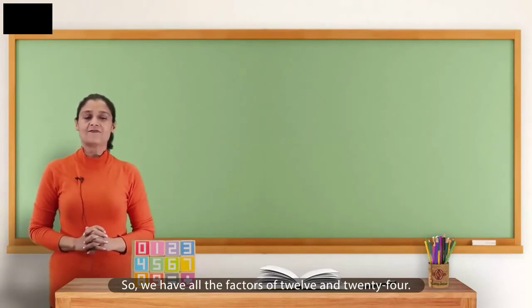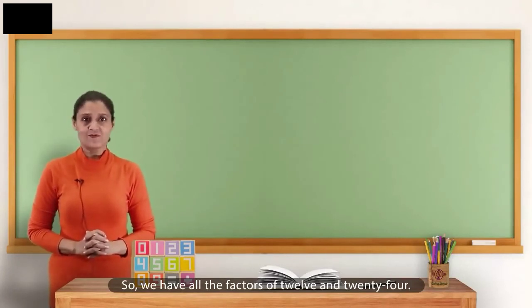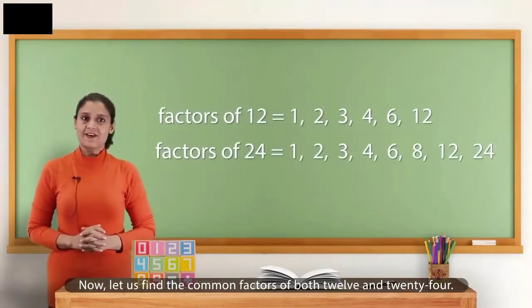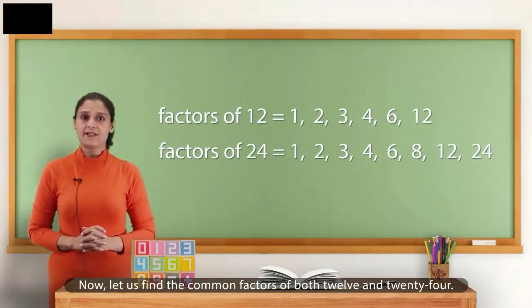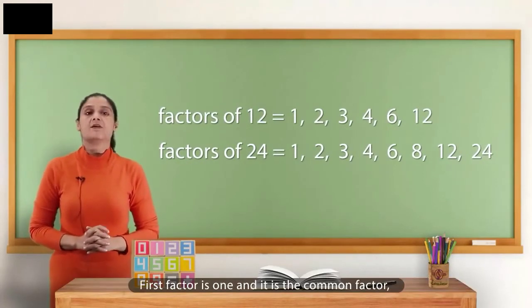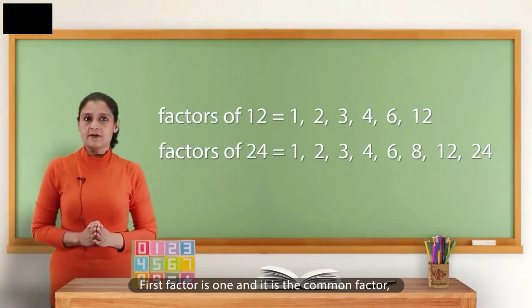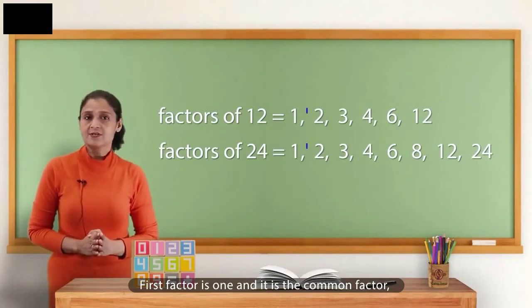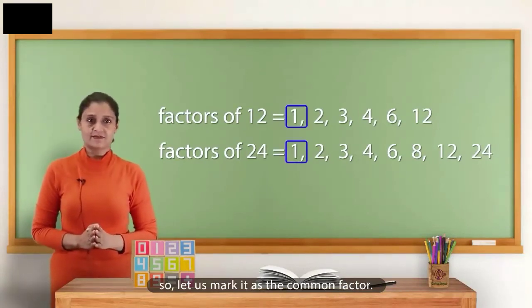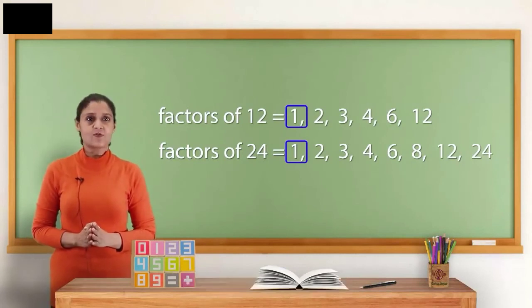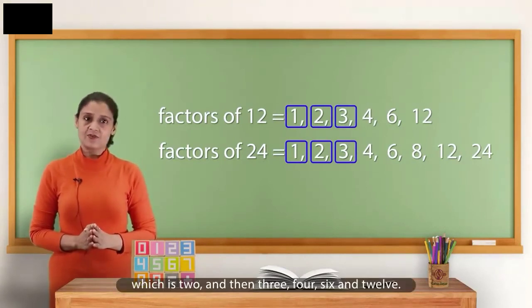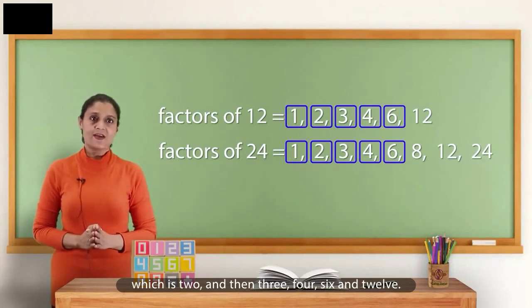So, we have all the factors of 12 and 24. Now, let us find the common factors of both 12 and 24. First factor is 1 and it is the common factor. So, let us mark it as the common factor. Coming to the next factor which is 2 and then 3, 4, 6 and 12.